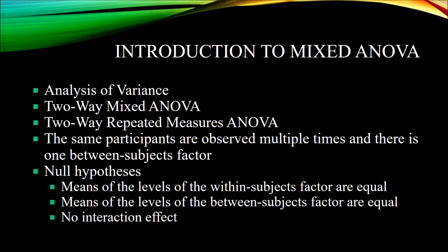In a mixed ANOVA, you have the same participants being observed multiple times, and you have a between-subjects factor. For example, let's say you have 60 participants, and you have a special type of group therapy that you have developed. You believe it'll be effective for treating anxiety, and you believe that its effectiveness will last for some time — effective if you measure anxiety right after the group therapy is completed, and also effective if you measure six months later. At the same time, you believe that the effectiveness may be different based on gender.